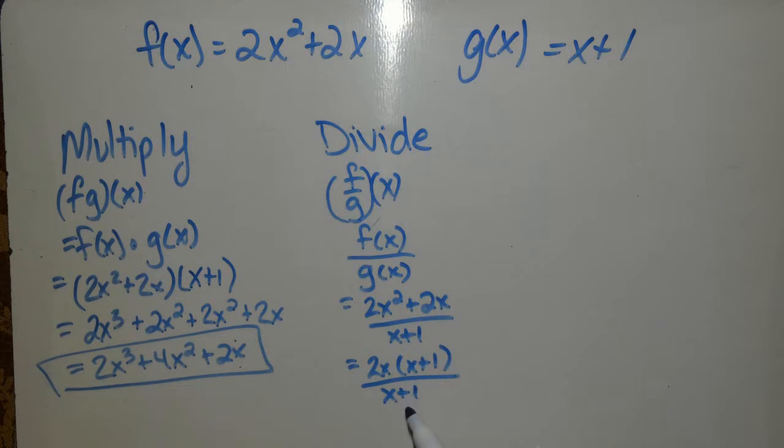Well, x plus 1 divided by x plus 1 is just 1, so that leaves 2x. And the only thing I need you to tell me is what would make this undefined. So remember,